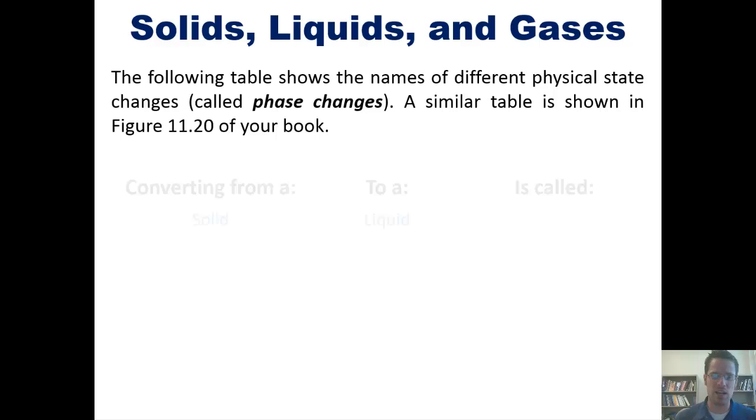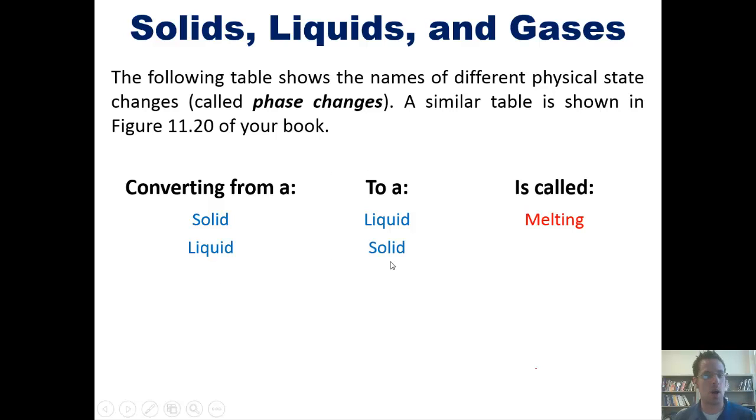With that in mind, the table that I've created right here shows the different names for changing physical states. A similar table is also found in our text. If, for example, you convert a solid into a liquid, it's called melting. You probably know that. If you convert a liquid to a solid, however, what's it called? It's called freezing. Nothing new there.